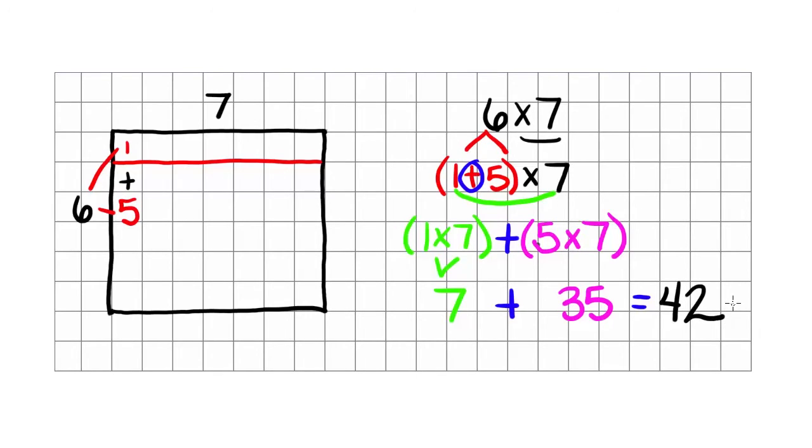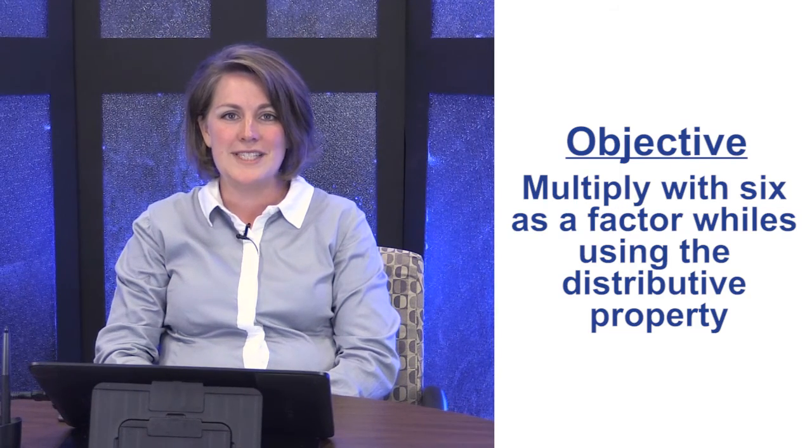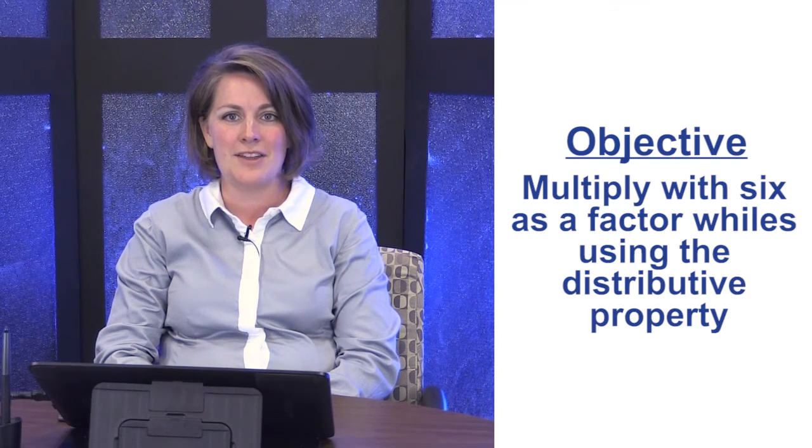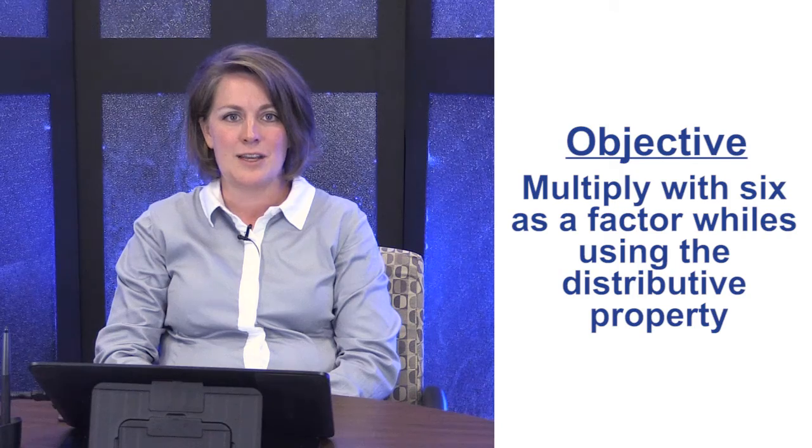Once again, this helps to make the connection that multiplying by 6 is the same as multiplying by 5, and just adding one more set. Our goal was to be able to multiply with 6 as a factor. We did this by simply multiplying the other factor by 5, and then adding one more set.